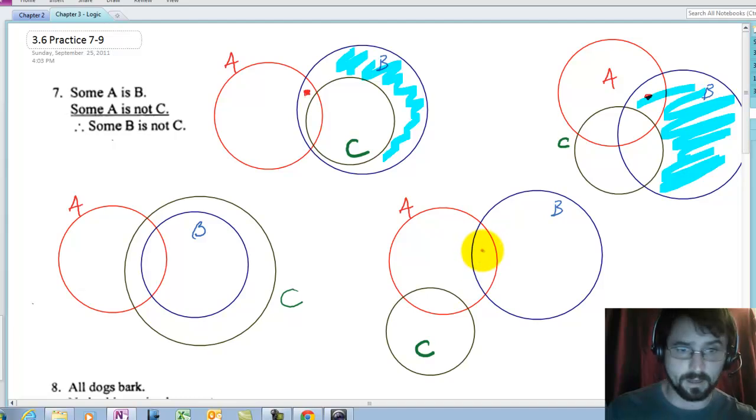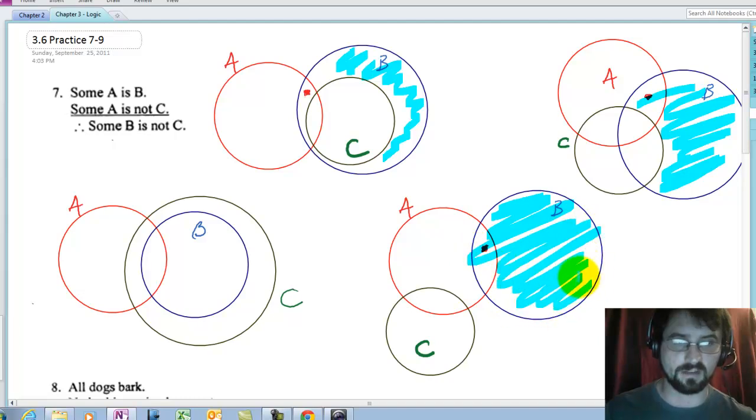We haven't seen it yet, but eventually I'll get to one of these pictures, and it will show that it's invalid. Let's look at this one, down here on the right. Some A is B. There's an A that's a B. Some A is not C. That same one is not a C. That doesn't work.